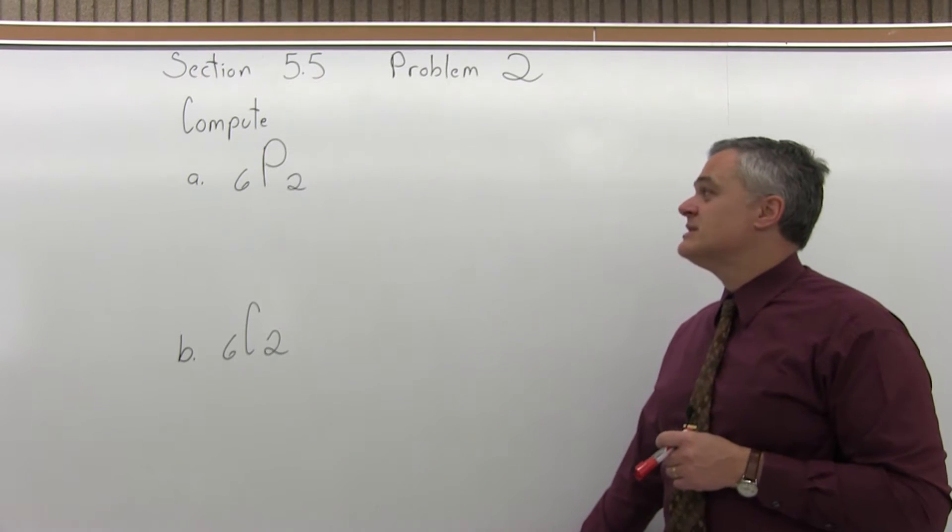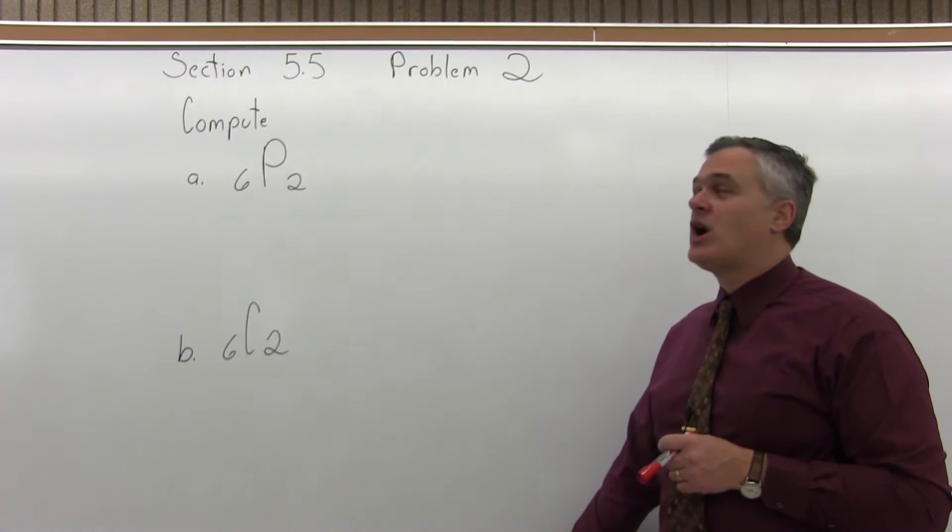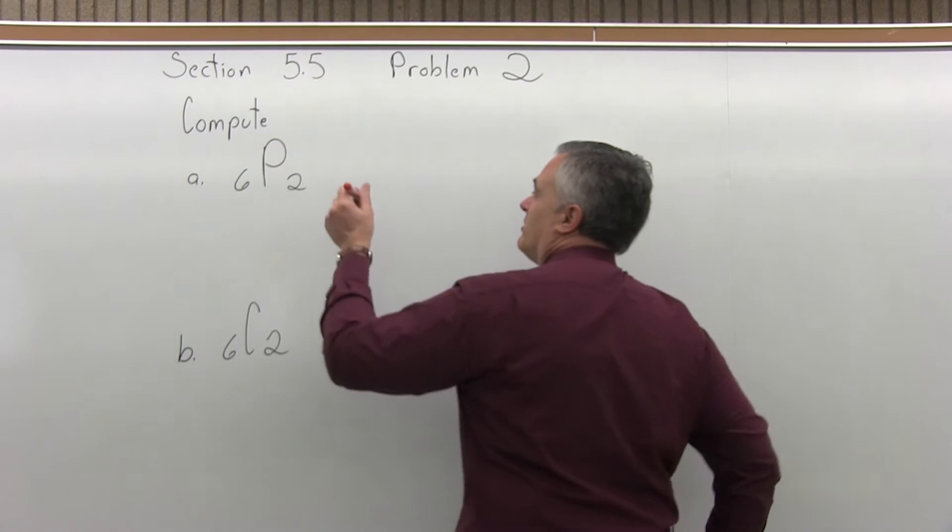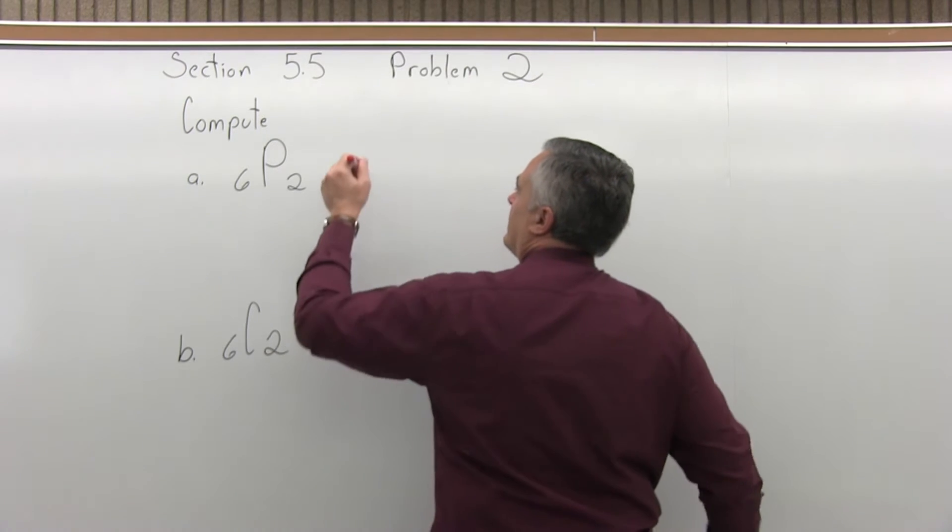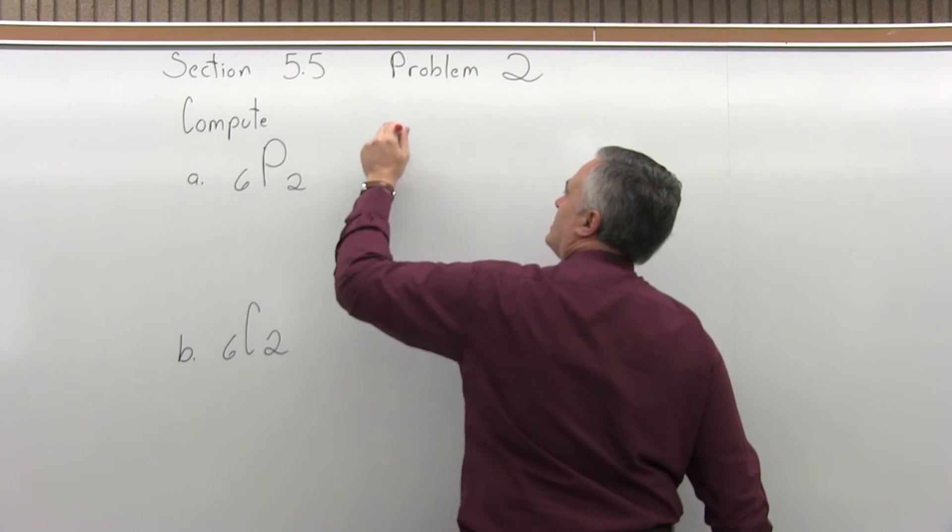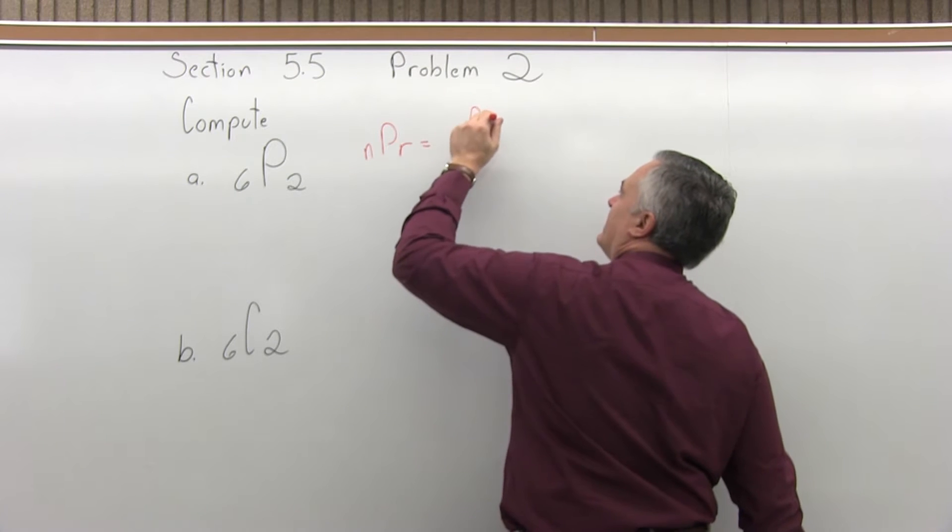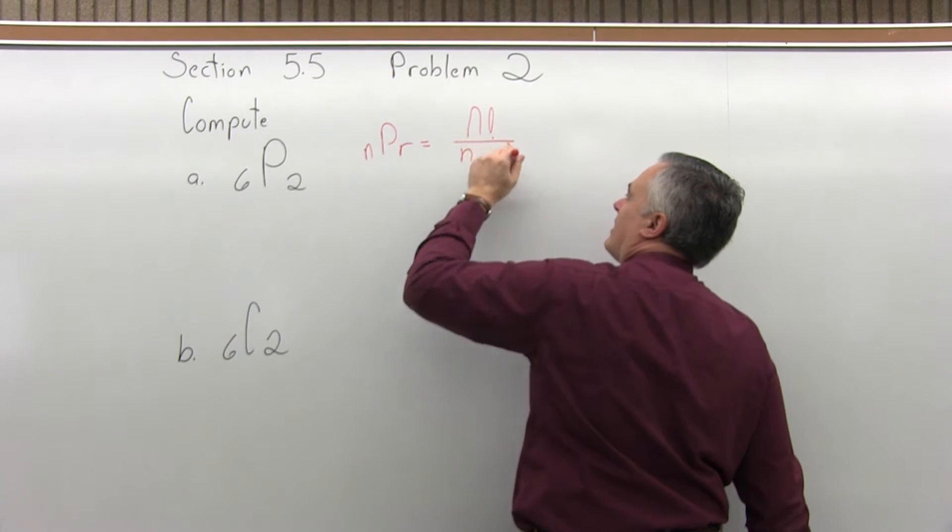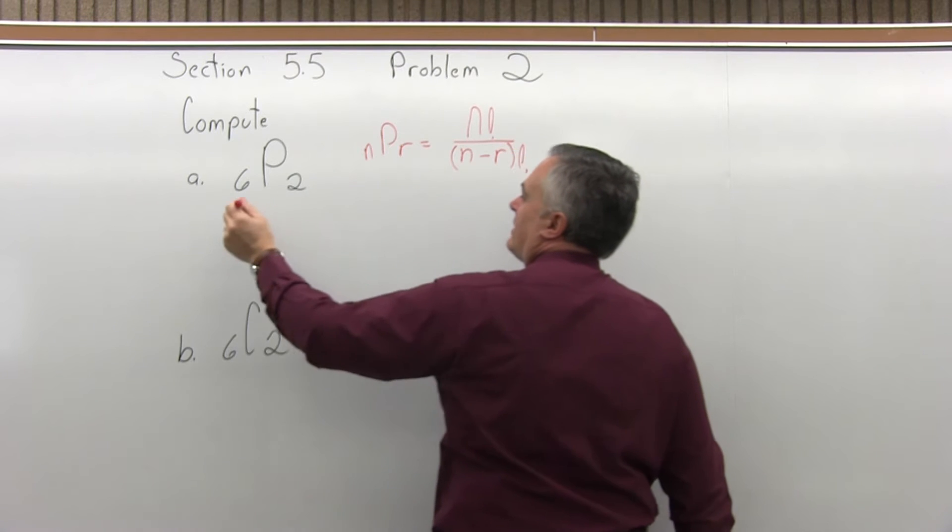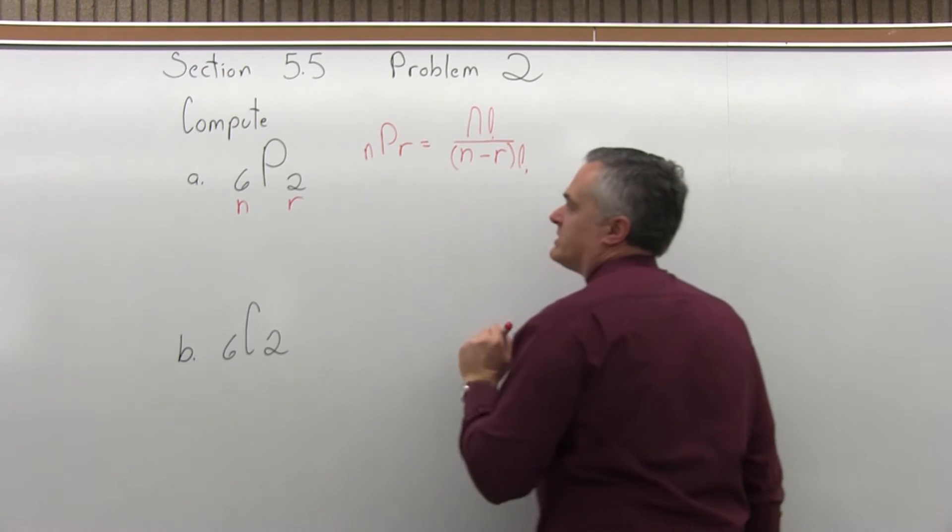I want you to compute 6 permutation 2 and 6 combination 2. So the permutation formula is n permutation r equals n factorial over n minus r factorial. The larger number is the n and the smaller is the r.